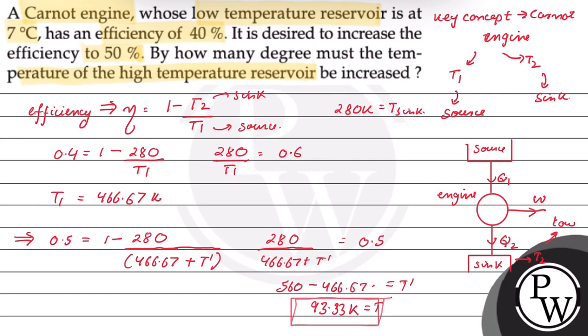Therefore 93.3 Kelvin should be the temperature increase to change the efficiency from 40% to 50%. Hope you understood it well. Best of luck.